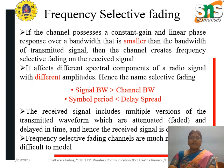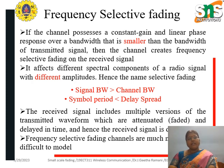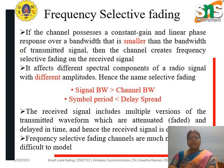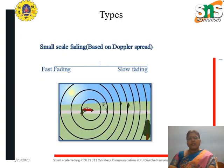In frequency selective fading, it affects different spectral components of a radio signal with different amplitudes. The condition is that signal bandwidth is greater than channel bandwidth, and symbol period is less than delay spread. The received signal includes multiple versions of the transmitter waveform that are attenuated, faded, and delayed in time, making it very difficult to model compared to flat fading.